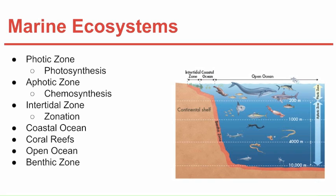The open ocean extends from the continental shelf outwards and can be anywhere from 500 to 11,000 meters deep in the deepest trenches. Organisms here are exposed to incredibly high pressure, frigid temperatures, and total darkness, with low levels of nutrients — requiring special ways of obtaining food.